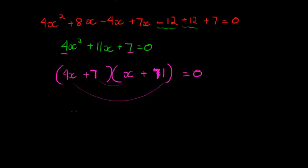Let's continue. This means that my solutions are 4x plus 7 equals to 0, or x plus 1 equals to 0. But if x plus 1 is equal to 0, then x is equal to negative 1. And this one, x is equal to negative 7 over 4.